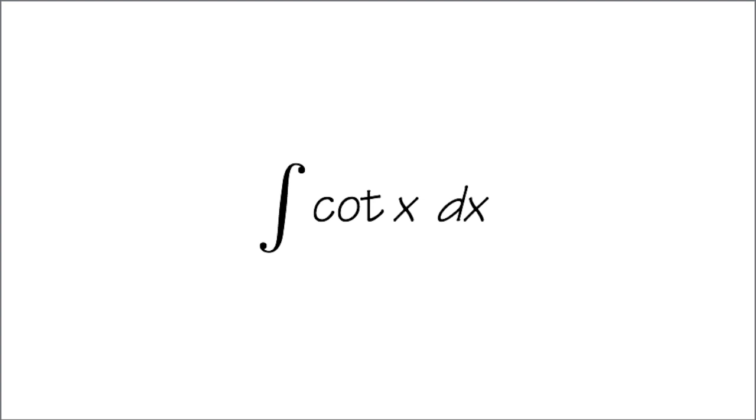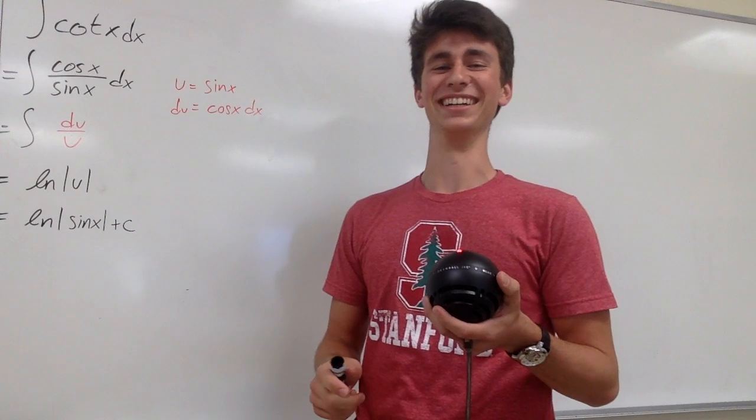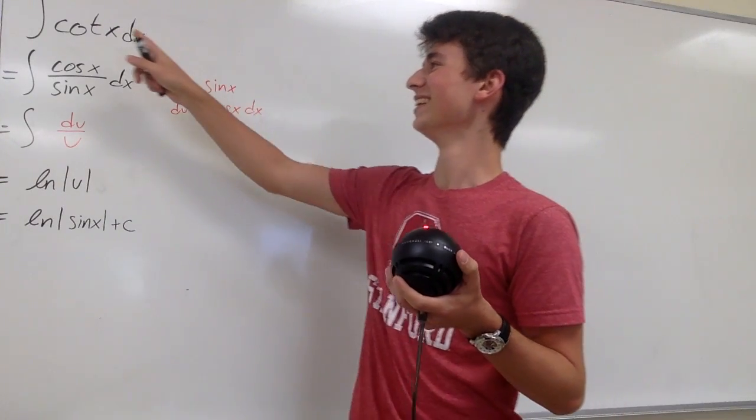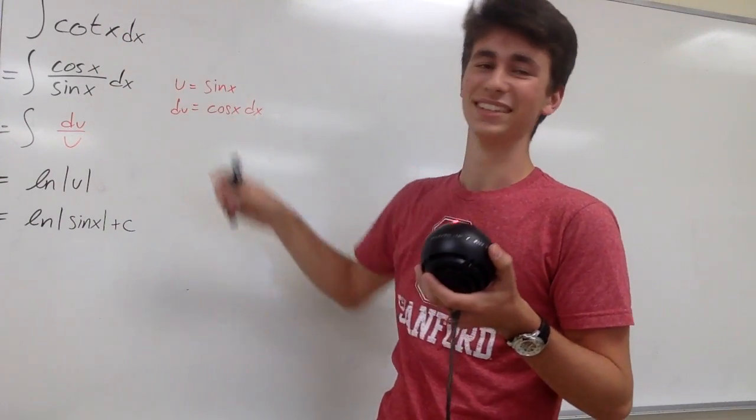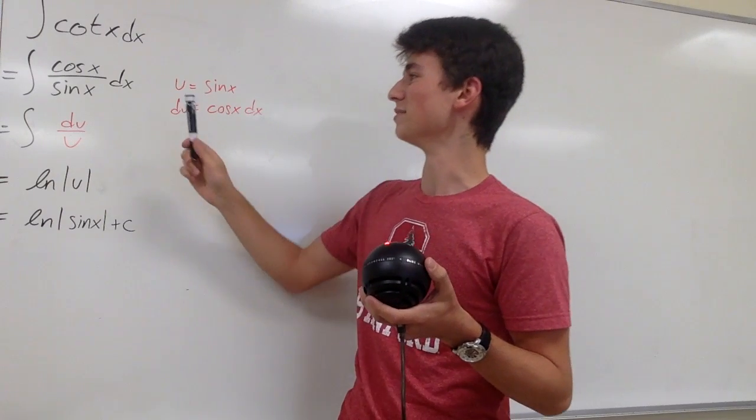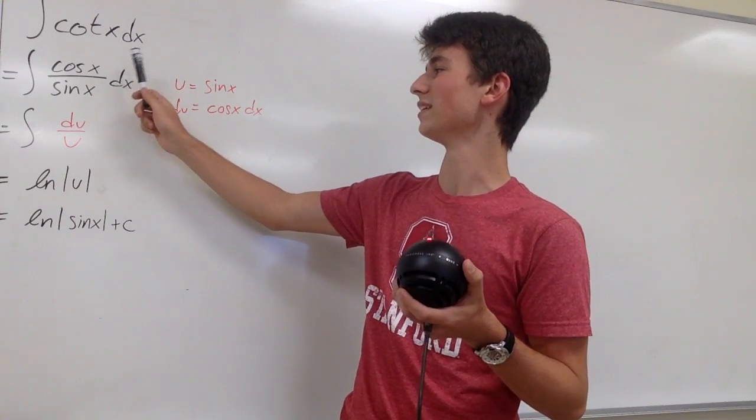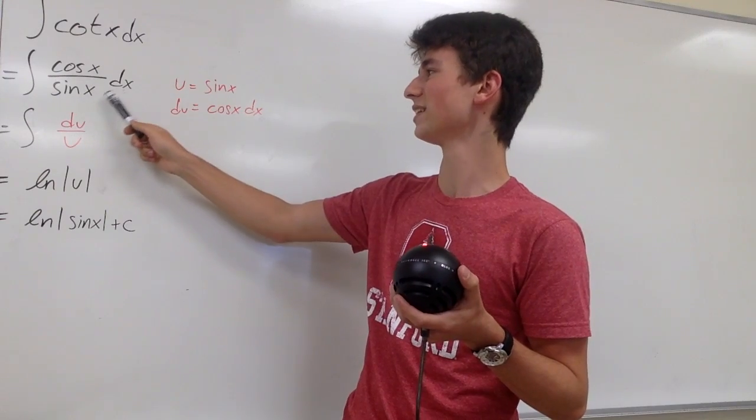Hi, I'm Aaron. Hi, I'm Aaron. And we're going to be integrating cotangent x dx. We can start by splitting cotangent x into cosine x divided by sine of x dx.